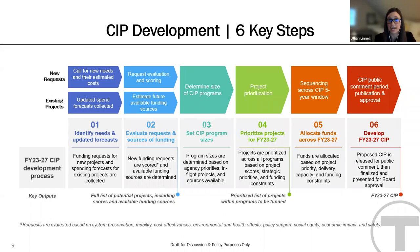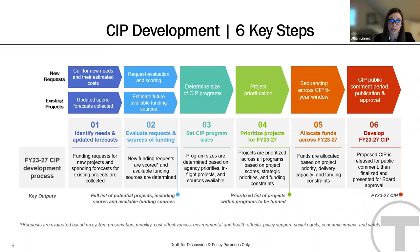Each year, the MBTA undertakes a robust process that strives to build a capital plan that reflects a balanced portfolio of investments. The process begins with the collection of updated cash flows for existing projects, which inform our understanding of available sources and estimated funding levels across the five-year window. We then conduct a call for projects where sponsors from MBTA departments submit requests for funds.